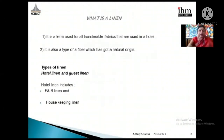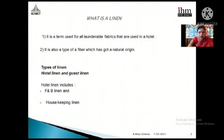Now, what is linen? This is a very familiar word. Linen is a fabric that is launderable — meaning anything that can be washed. Linen is a launderable fabric used in a hotel, and it is also a type of fiber which has a natural origin. When we talk about linen, it has come from a flax plant, so it has a natural origin.